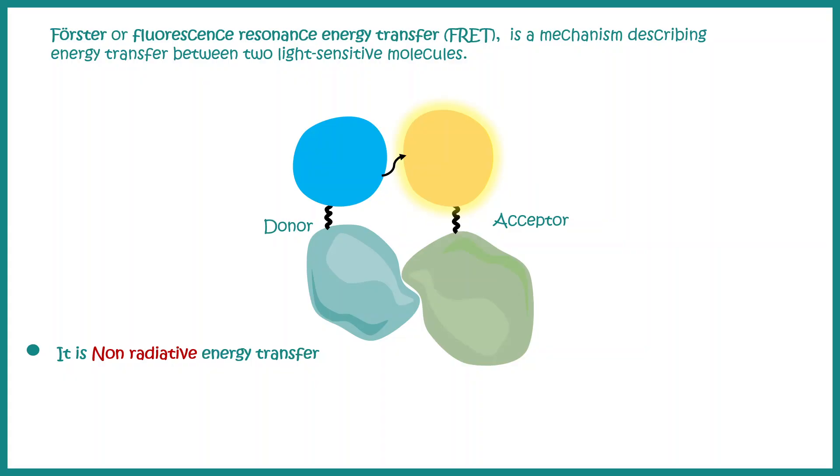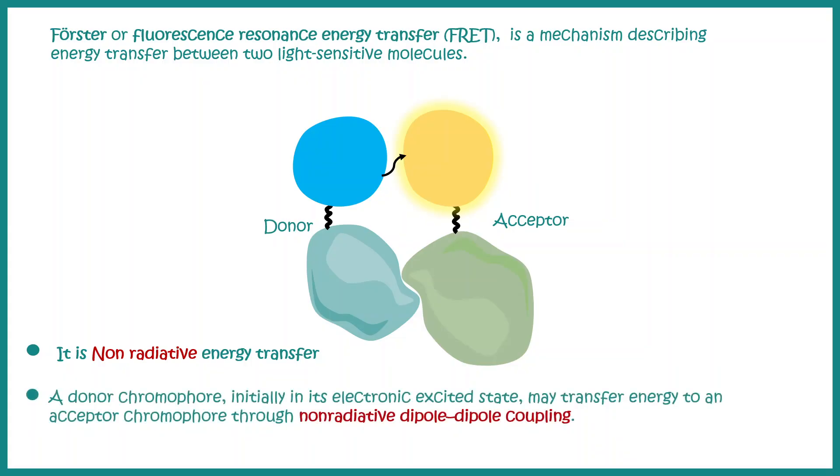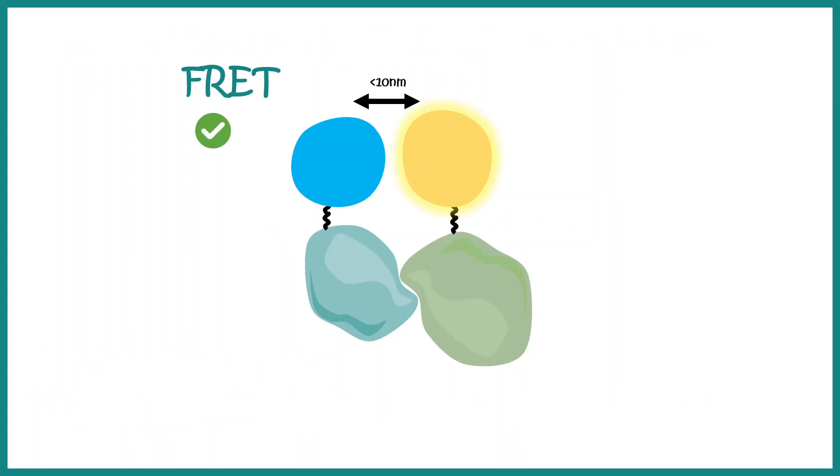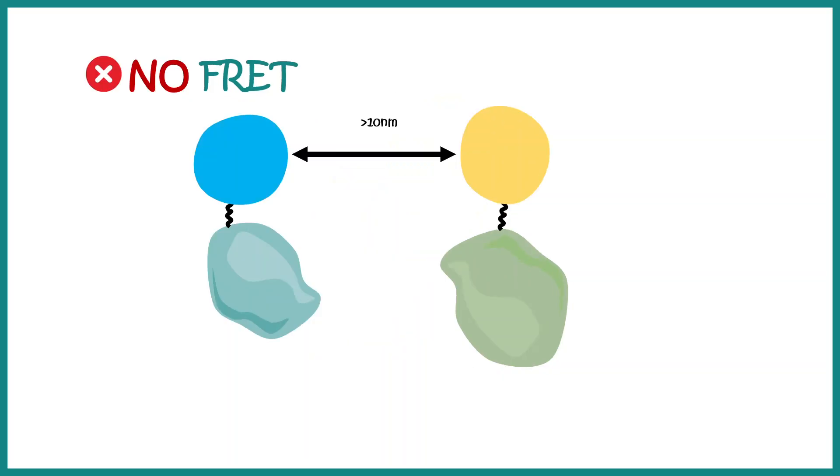First, we should understand that FRET is a non-radiative energy transfer and it happens due to non-radiative dipole-dipole coupling. FRET happens when these fluorophores are at very close proximity, at a distance roughly below 10 nanometers. But when the distance between these molecules is greater than 10 nanometers or more, FRET is not possible.